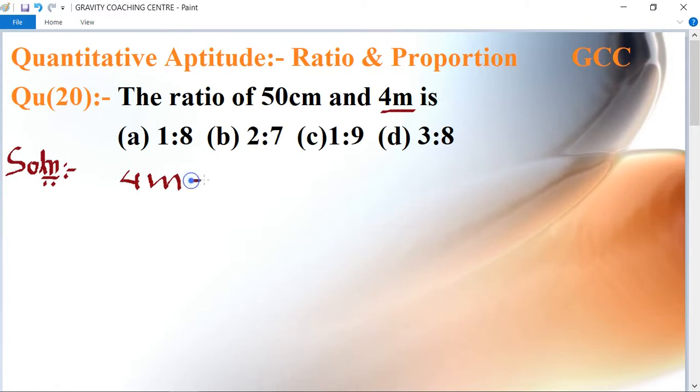into centimeters. So it is multiplied by 100. 4 meters equals 400 centimeters. Therefore, the required ratio equals